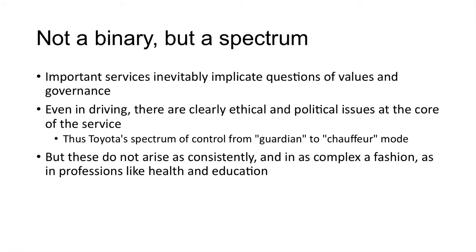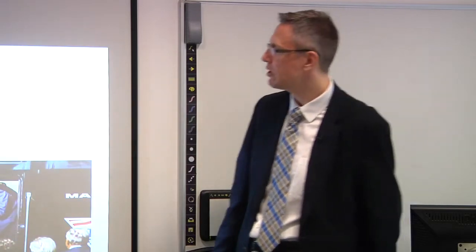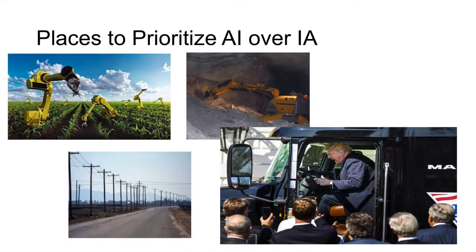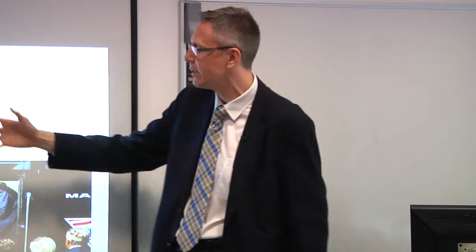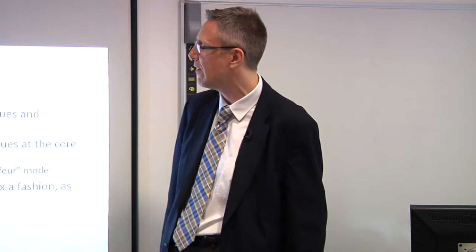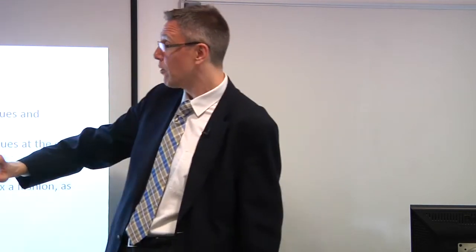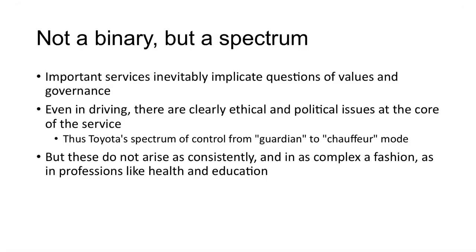But these are places where I think you could prioritize, but I want to admit it's not a binary, it's a spectrum. I'd say that important services that you don't want to accelerate automation of too quickly, they implicate questions of values and governance. I don't know if there's that many questions of values and governance in terms of how well the tomato gets picked or how fast the diamonds or coal are taken out. But I do think there are more clearly implicated questions of value in some of the professions that I brought up earlier. Even in driving, Toyota has a spectrum of control from guardian to chauffeur mode. And it's interesting there too, where they want to allow people to have some choice in their technology.